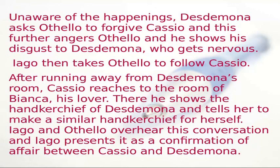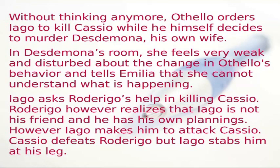Iago takes Othello to follow Casio. After fleeing Desdemona's room, Casio reaches the room of Bianca, his lover, and shows her Desdemona's handkerchief, asking her to make a similar one for herself. Iago and Othello overhear this conversation, and Iago presents it as confirmation of an affair between Casio and Desdemona. Without thinking any further, Othello orders Iago to kill Casio while he himself decides to murder Desdemona, his own wife.